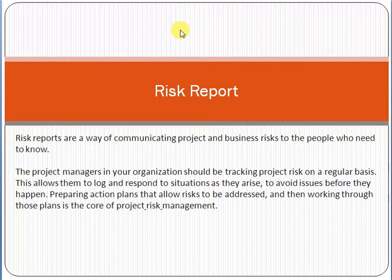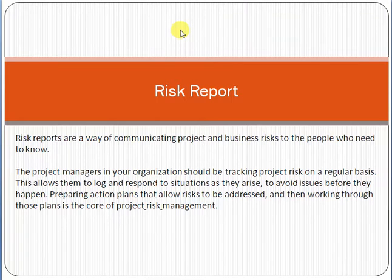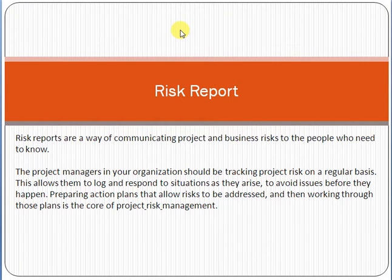For example, if you are implementing an e-commerce solution for a customer and you have to complete it in four months, after those four months the project will finish, resources will be released, and no more expenses or resource engagement will be there. The output is a unique e-commerce solution. Project means it is temporary — it has a beginning and ending point and gives a unique output. A project can never be an ongoing activity.